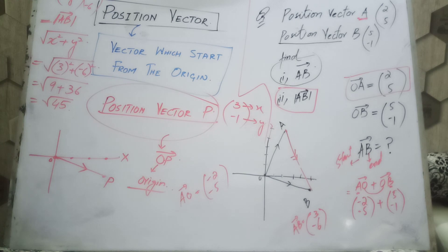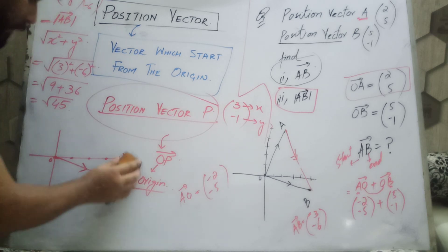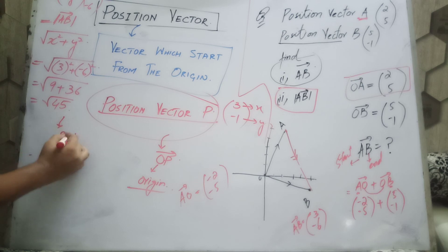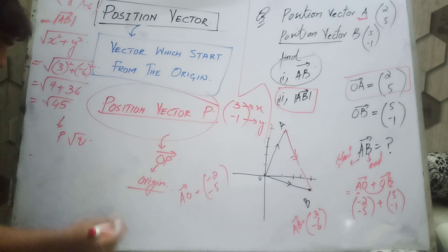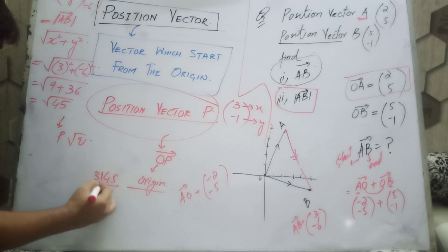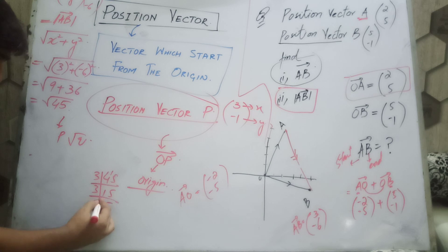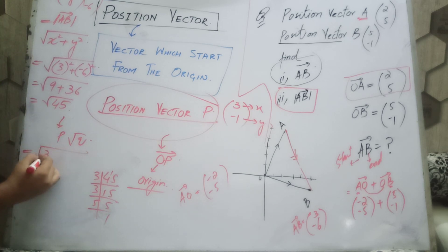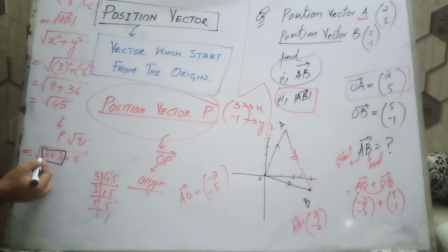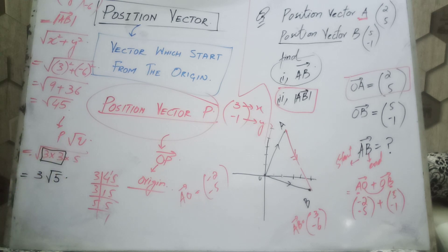So the magnitude is the square root of 45. Now, how can we simplify this further? We can simplify root 45 and give the answer in the form p root q. Root 45 equals root of 9 times 5, which equals 3 root 5. If you want to understand more, please subscribe to the channel.